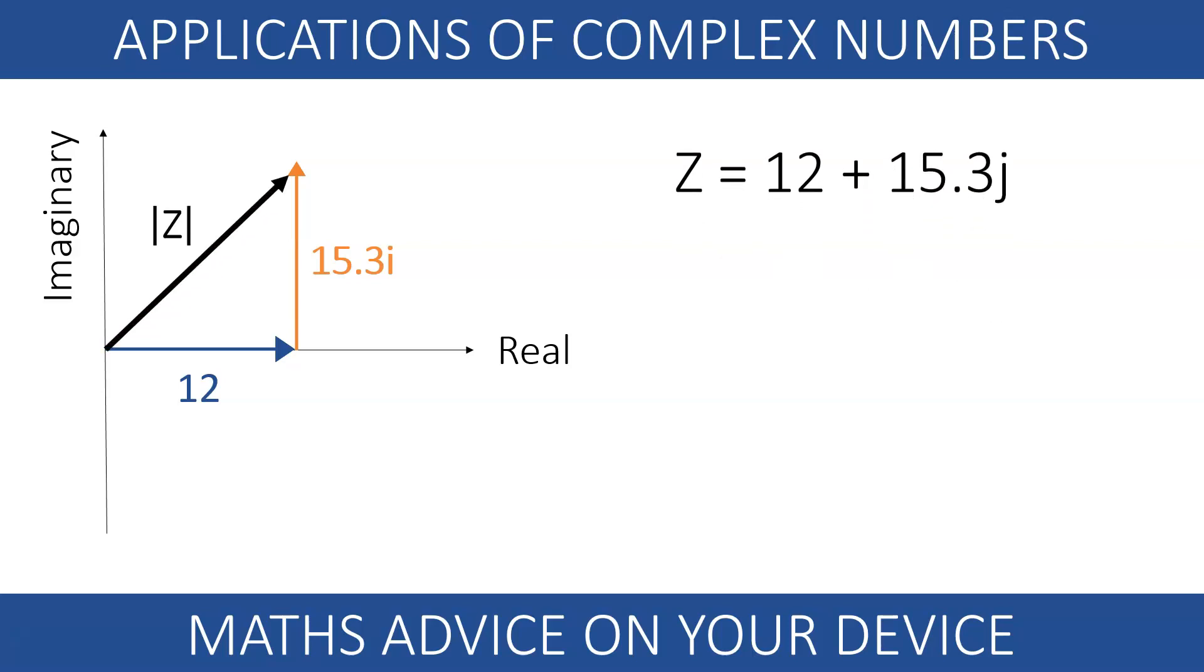The modulus of this complex number tells us how much the circuit opposes the current when we apply the voltage. The argument of this complex number represents the difference in phase between the voltage and the current. Can you find the modulus and the angle using Pythagoras and trigonometry? Stop the video here and give it a go!